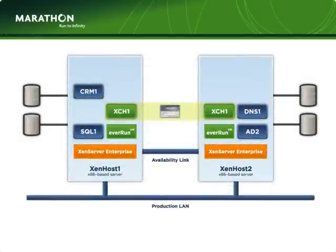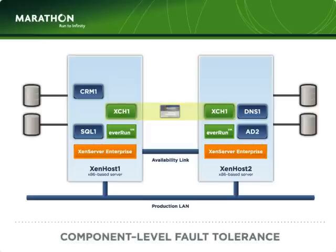Now let's take a look at how EverRun automates fault management and recovery. EverRun offers various levels of fault tolerance to ensure the appropriate protection levels for each individual guest. The base level of EverRun protection is called component-level fault tolerance. Component failures such as disk, storage, controllers, and network devices are handled by EverRun without any interruption to the applications. In the configuration shown, EverRun is synchronously writing to the storage on both hosts, ensuring all transactions are saved on both systems.